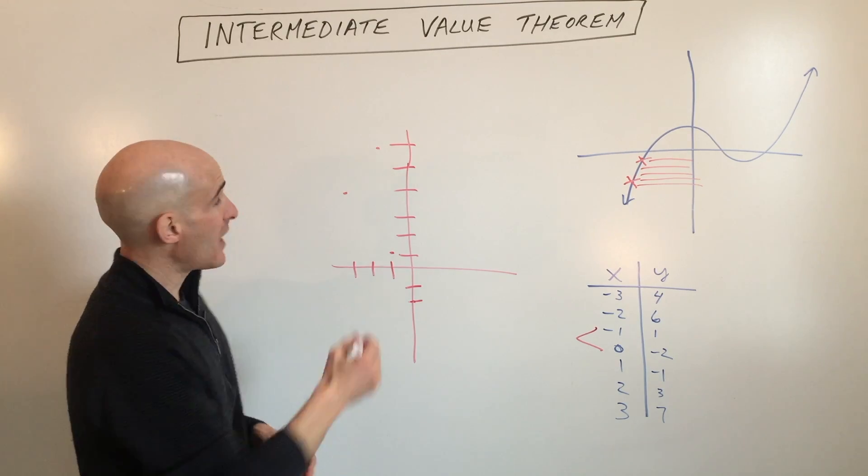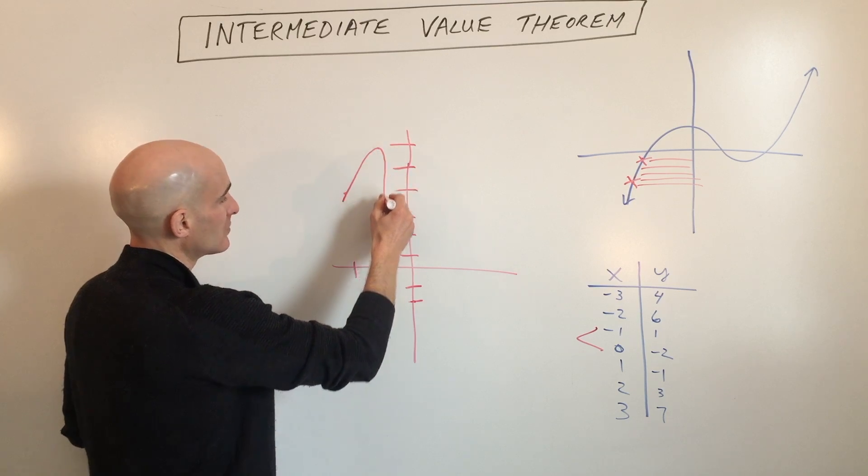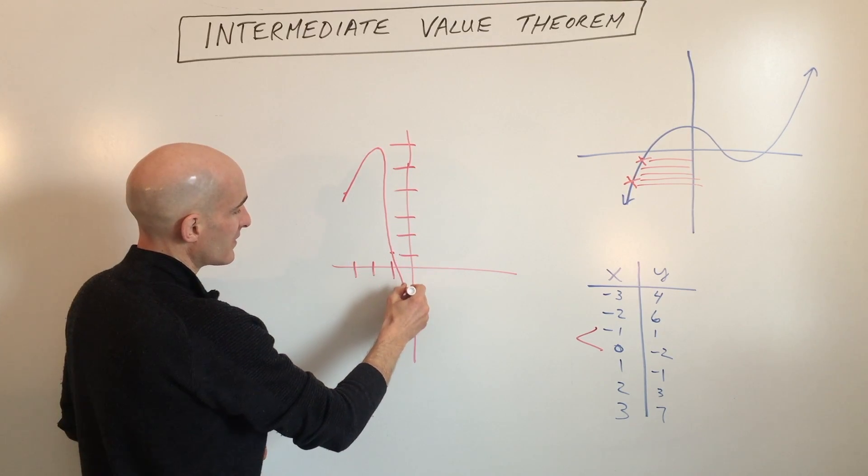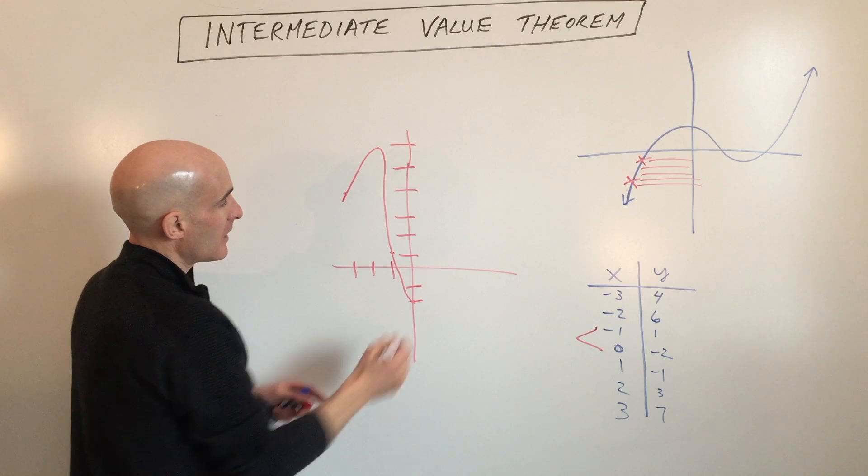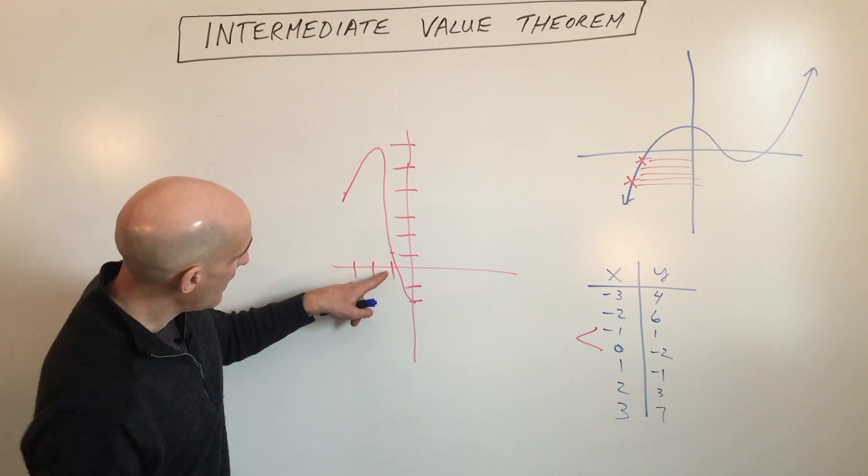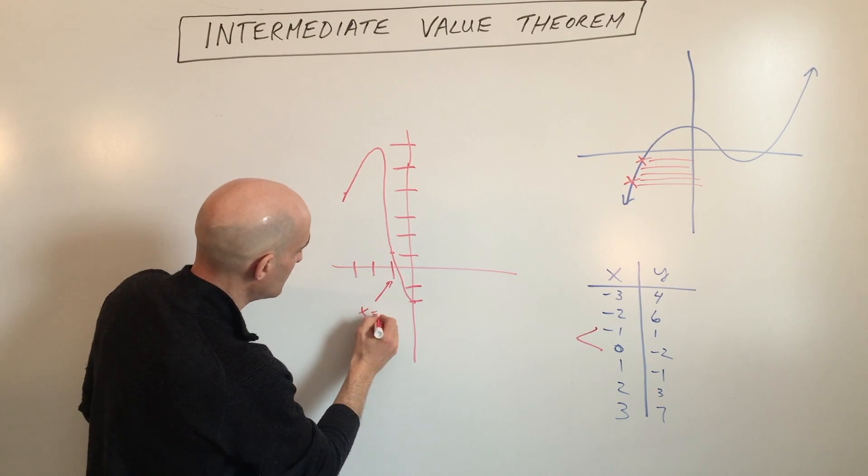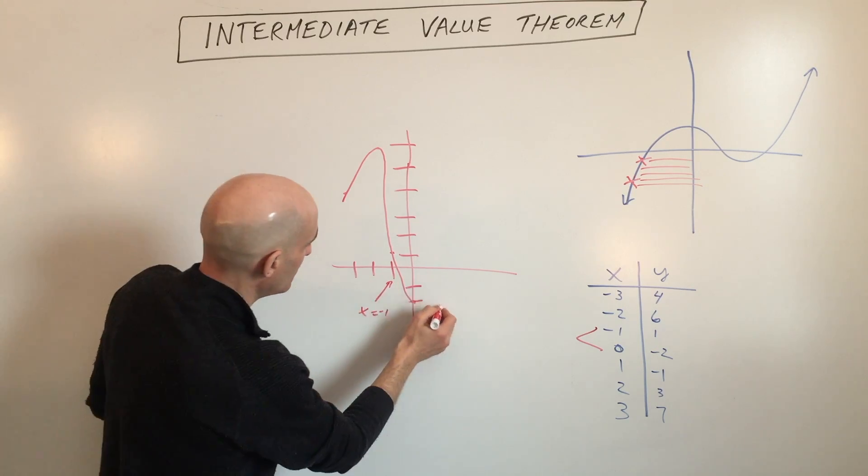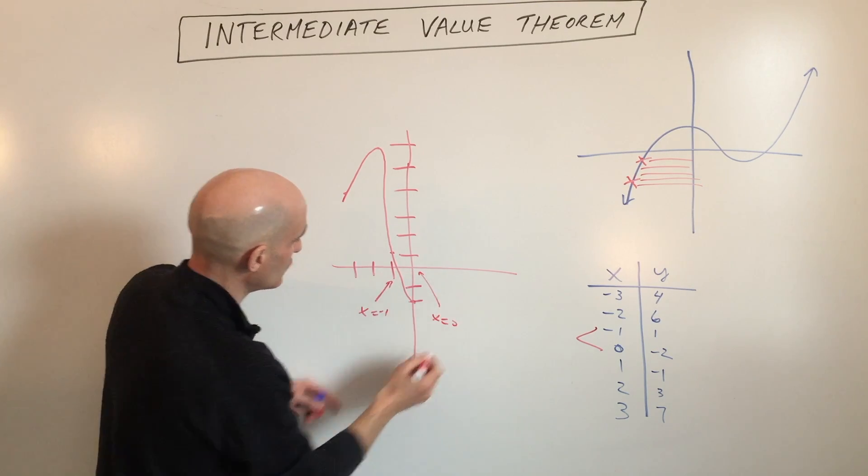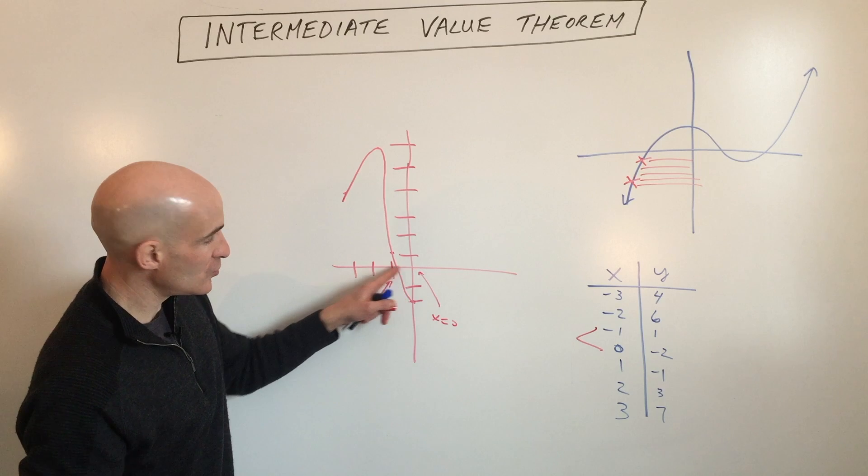If this is a continuous graph, that means this graph, say for example, it's like this, right? And what's happening, so between X equals negative one and X equals zero, in between these two X coordinates...